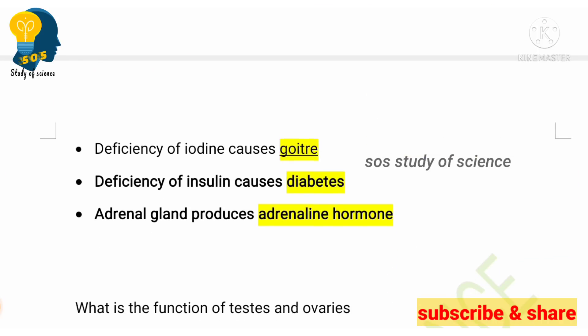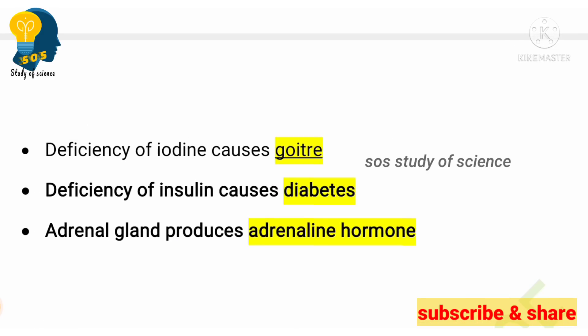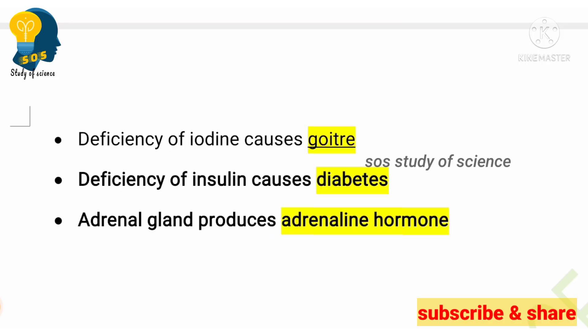Moving to next: you need to know animal hormones — their uses and functions. One very important topic is deficiency of iodine. Iodine is very important for the thyroid gland to stimulate the thyroxine hormone. If there is not a sufficient amount of iodine in our body, deficiency of iodine causes goiter. Next: deficiency of insulin — when insulin is not produced properly in our body, it causes diabetes.